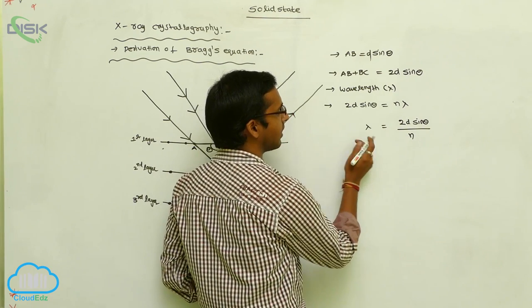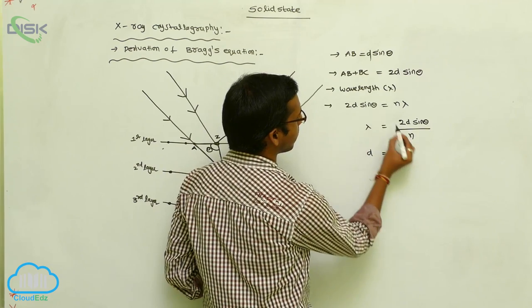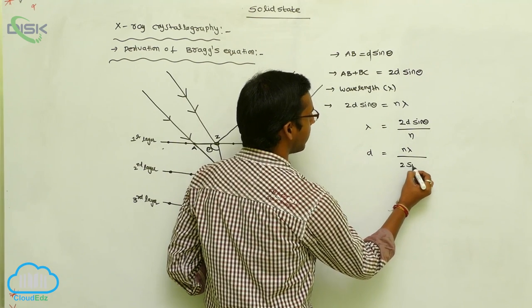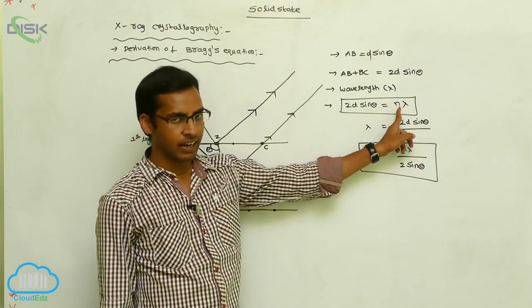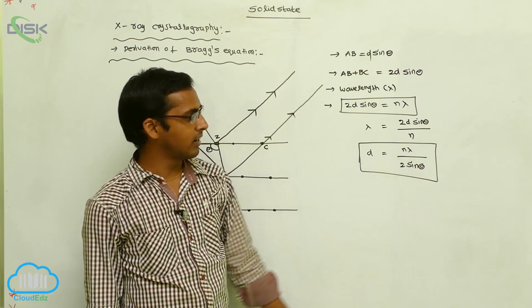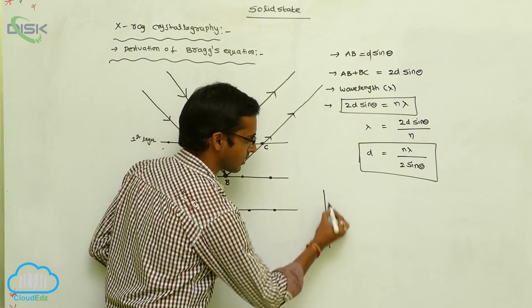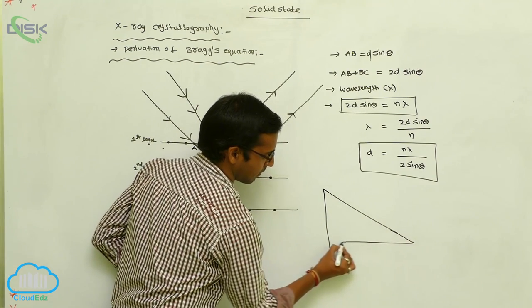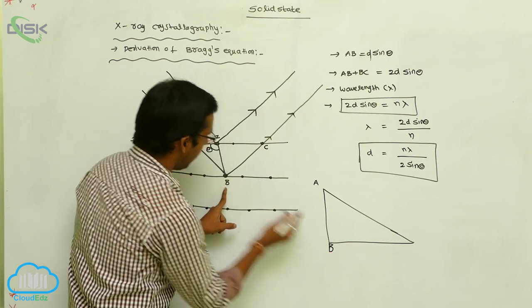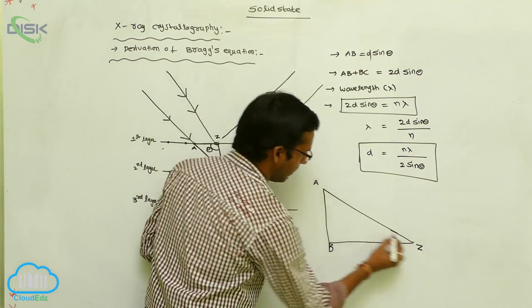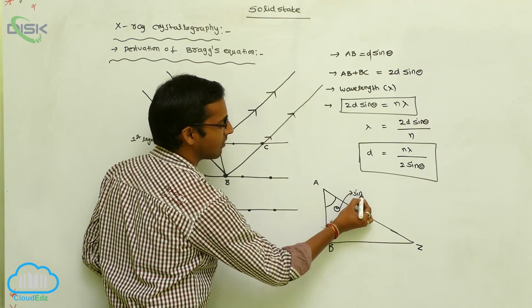So lambda equals 2D sine theta by n, or D equals n lambda by 2 sine theta. This is your trigonometric arrangement. Now I am representing this with a small diagrammatic representation. In this, the points are: your A point, this is A, this is B point, arranged at angle theta, that is your Z, that is your sine theta.